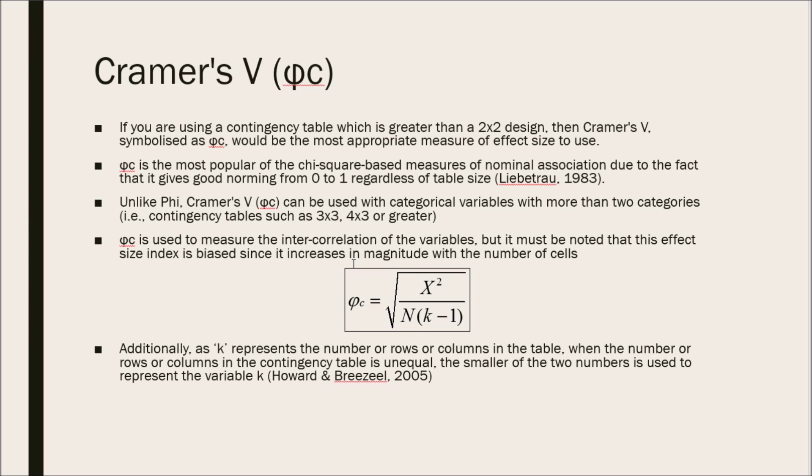So, Phi is only used for 2 by 2 and nothing more. And Cramer's V can be used for greater than 2 by 2. Unlike Phi, Cramer's V can be used with categorical variables with 2 or more categories, such as contingency tables that are 3 by 3 or 4 by 3 or even greater than that.